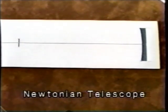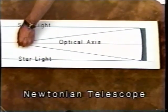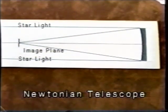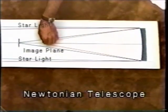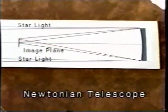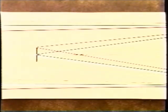The primary mirror of a Newtonian telescope has an optical axis which extends out from the center of the mirror. Starlight entering the tube, traveling parallel to the optical axis, focuses at the image plane, but slightly to one side of the optical axis. The farther off-axis these images are, the more distorted they become. This distortion is the result of off-axis aberrations.